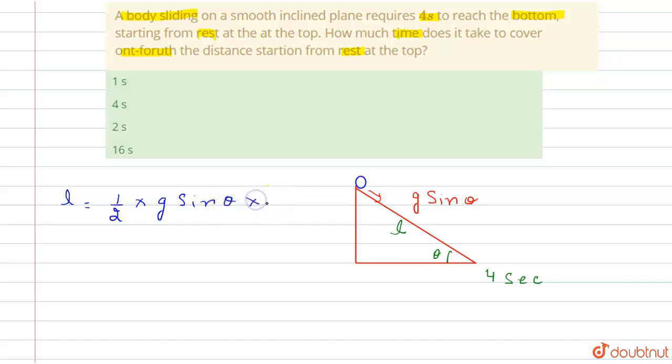In the second case, L by 4 equals one-half g sin theta times T squared. This time T we have to find.